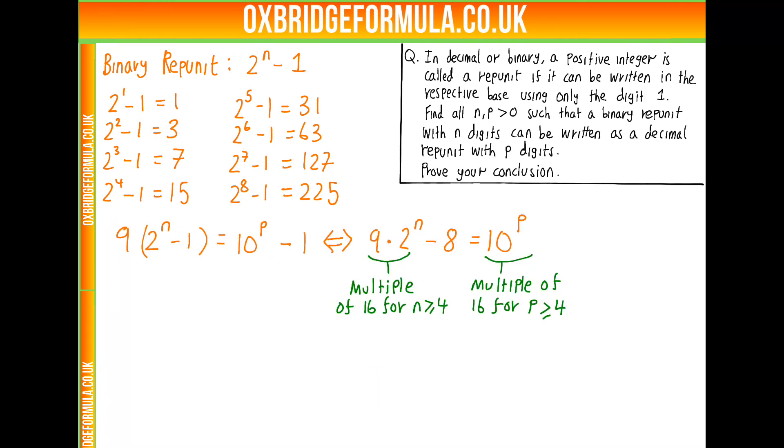So all we need to actually check is n less than 4 or p less than 4 for solutions. Because outside of this scenario, we know we've not got any. For n less than 4, p less than 4, well, we've checked nearly all of them up here. We've exhausted all the n less than 4 cases. And p less than 4, when we get a four-digit number in these examples, we stop. So there's only one more to actually check. 2 to the 9 minus 1, which is 511, which is not a repunit.